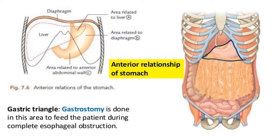The gastric triangle is important in gastrostomy surgeries. During upper GIT problems, such as obstruction of the esophagus, we insert a pipe from outside the body — that particular surgery is called gastrostomy. For this gastrostomy, surgeons prefer this gastric triangle.